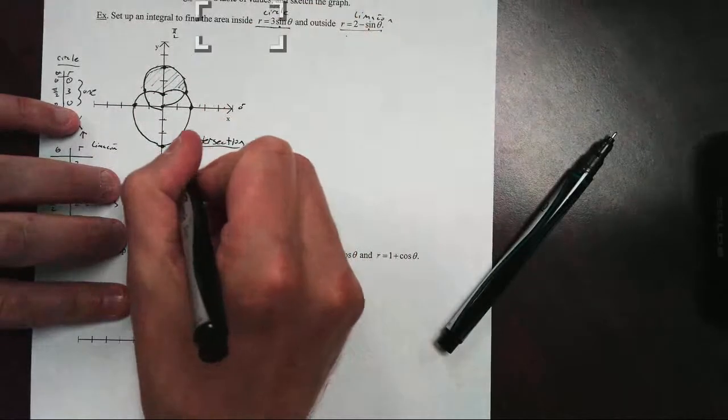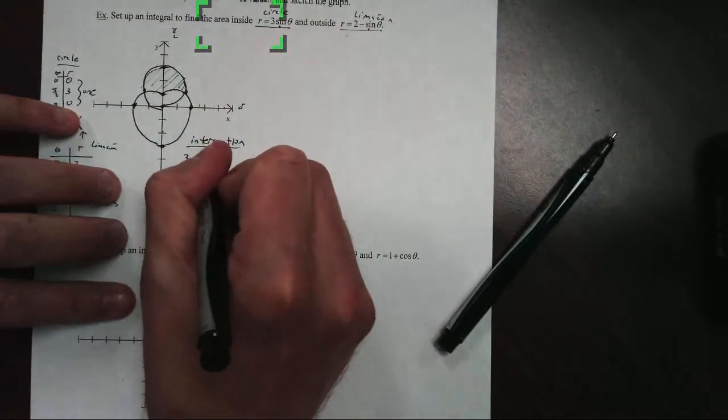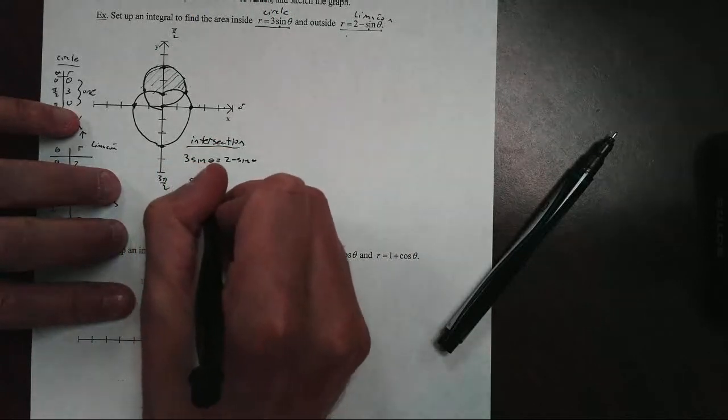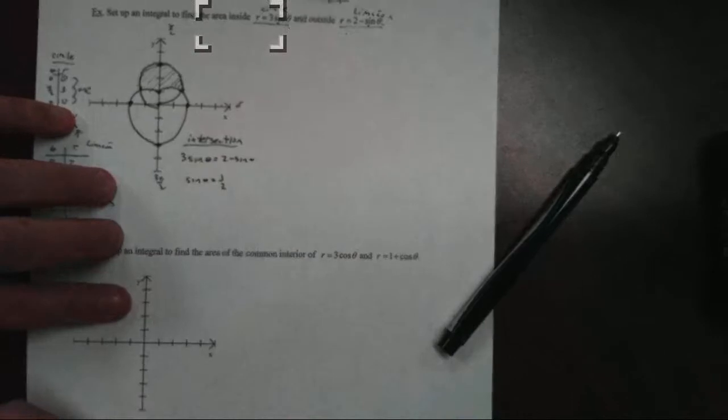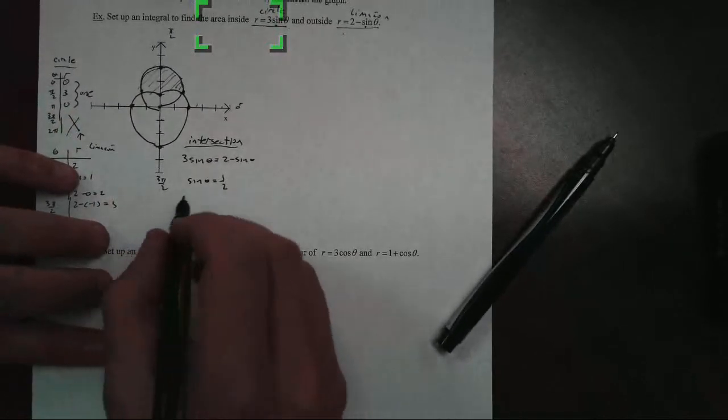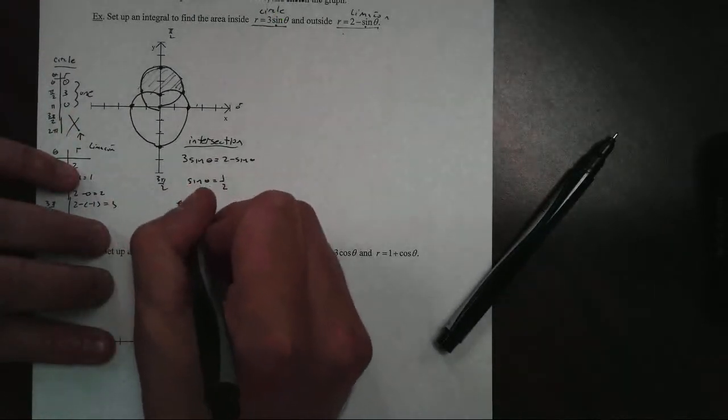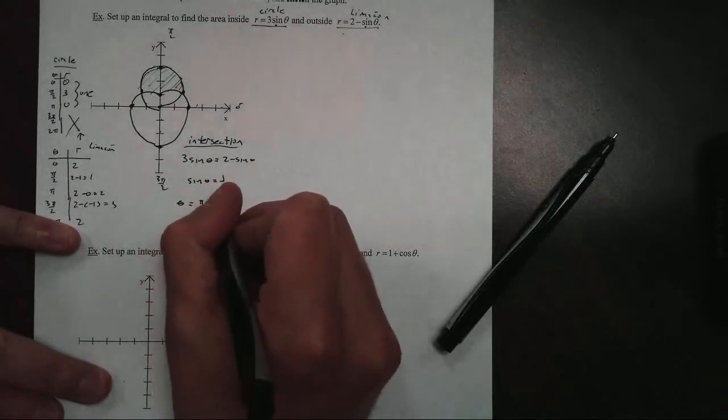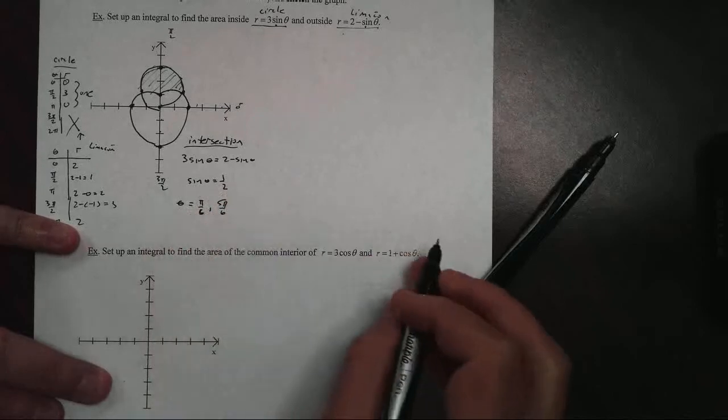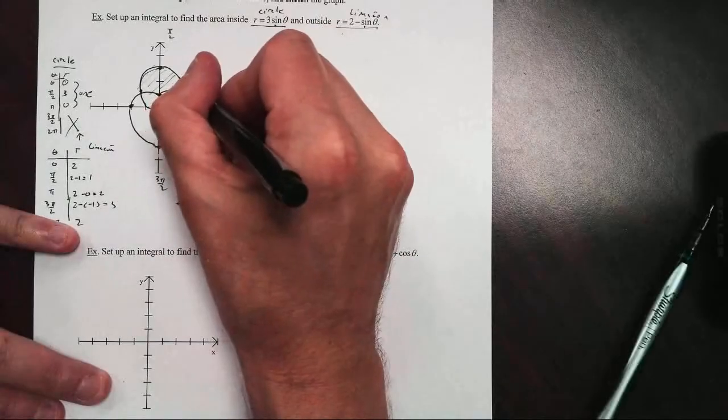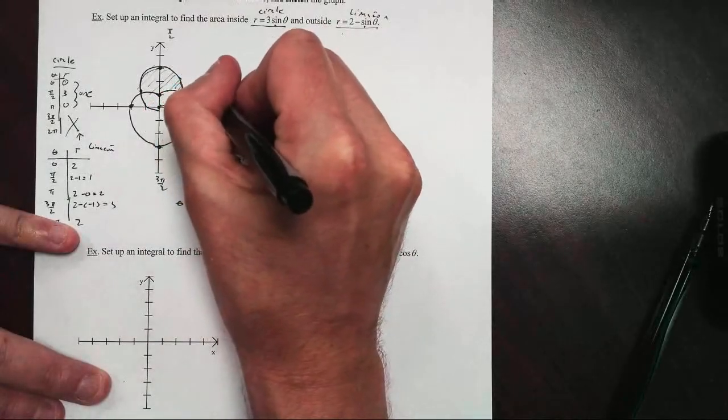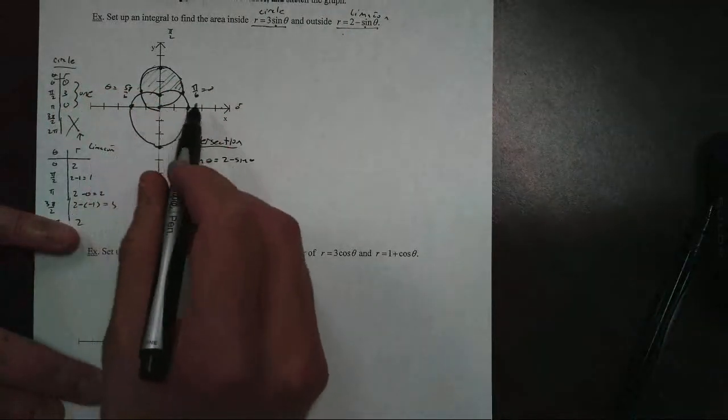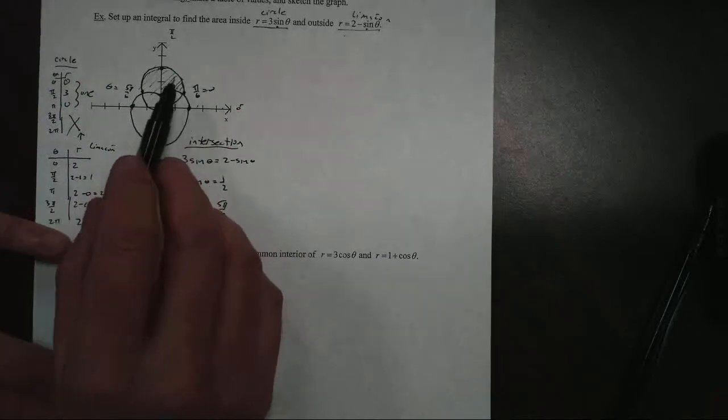Of course, we have to find that intersection. To get the intersection, we just set our two equations equal to each other: three sine theta equals two minus sine of theta. And that's going to give us sine of theta equal to one-half. Where is sine equal to one-half? Well, sine is equal to one-half at pi over six and five pi over six. It intersects at theta equals pi over six and theta equals five pi over six. So the shaded region involves this angle in between.